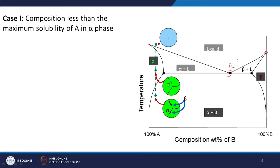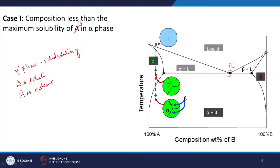Now for case one, we will look at a composition less than the maximum solubility of B in alpha phase — that point is the maximum solubility of B in alpha phase on the diagram. Alpha phase is a solid solution of B in A, where B is the solute and A is the solvent. The solubility of B varies as a function of temperature — you can dissolve more B atoms in A at higher temperature, and as you go to lower temperatures the solubility of B decreases, meaning B atoms would like to come out of solution.